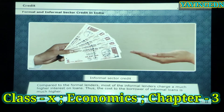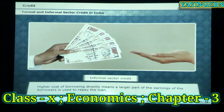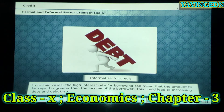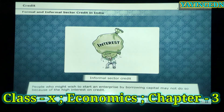Lenders in the informal sector claim any interest rate they feel right, and often we find unfair practices in such lending. Compared to formal lenders, most informal lenders charge a much higher interest on loans, making the cost to the borrower much higher. Higher borrowing costs mean a larger part of earnings goes to repay the loan, and in certain cases the amount to be repaid is greater than the borrower's income, leading to increasing debt and debt traps. People who might wish to start an enterprise may not do so because of the high interest on credit.